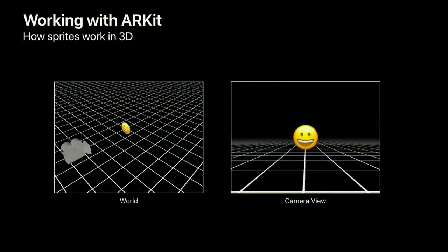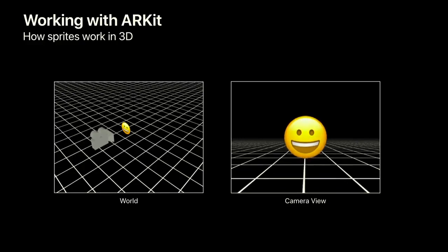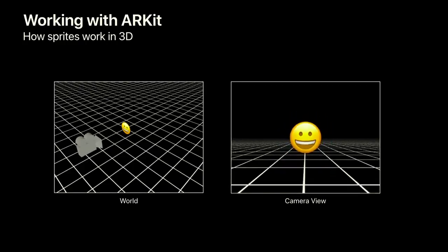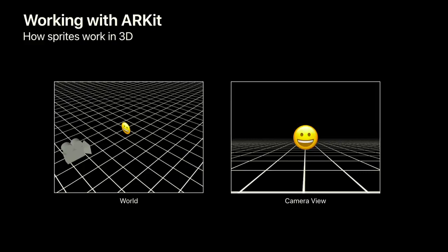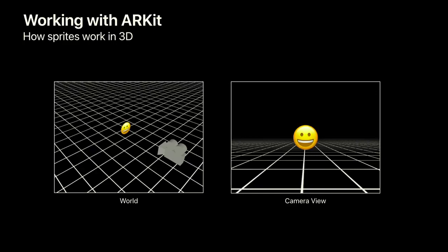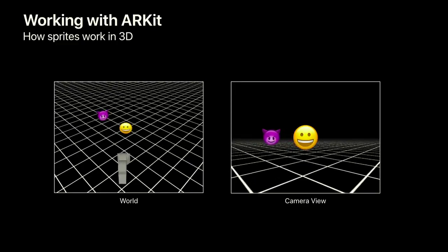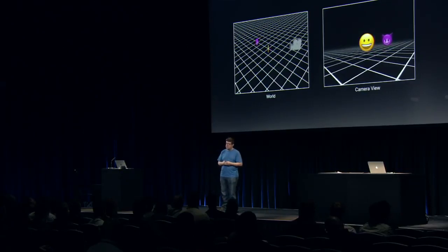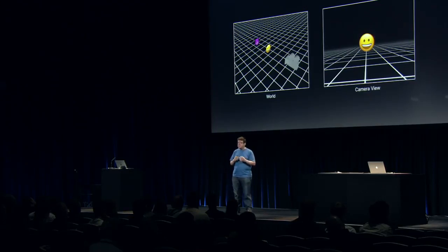Say we have a sprite positioned in 3D space and a camera observing it. As the camera moves closer, the sprite grows larger; as it moves further away, the sprite shrinks. As the camera rotates, the sprite continues to face the camera at all times, from any angle. With multiple sprites, those further away are rendered behind sprites that are closer to the camera. This simple technique allows your 2D SpriteKit content to work in a 3D space.